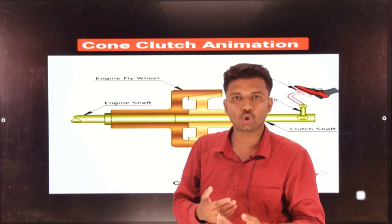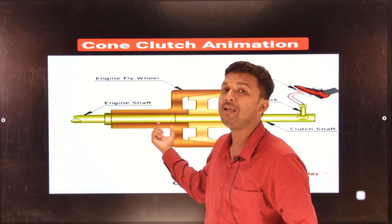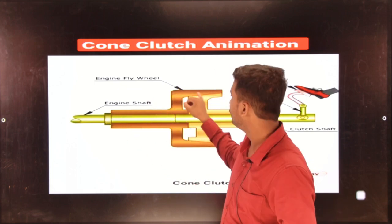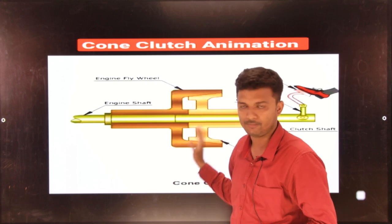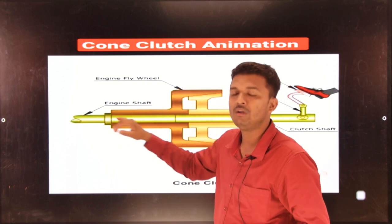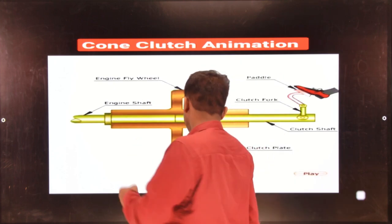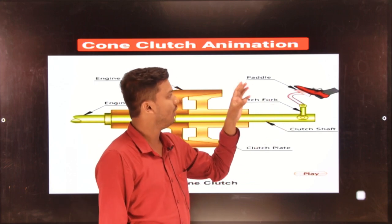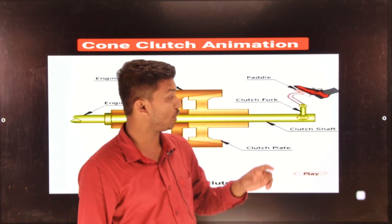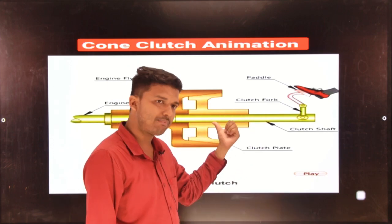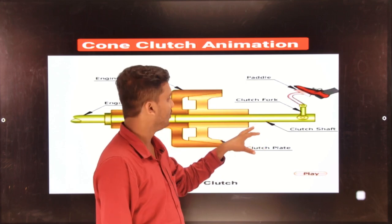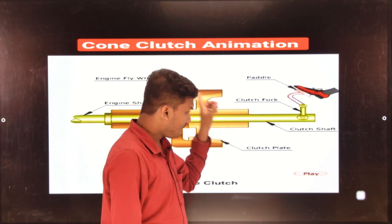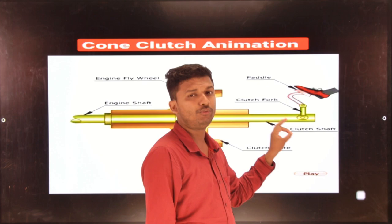The engine flywheel gives power or torque to the clutch directly. In the cone clutch, the outer part or female part is connected to the engine flywheel. So it indicates the engine flywheel — but this is the outer cone which is connected to the engine flywheel. The clutch shaft or driven shaft here is what moves the output side of the system.